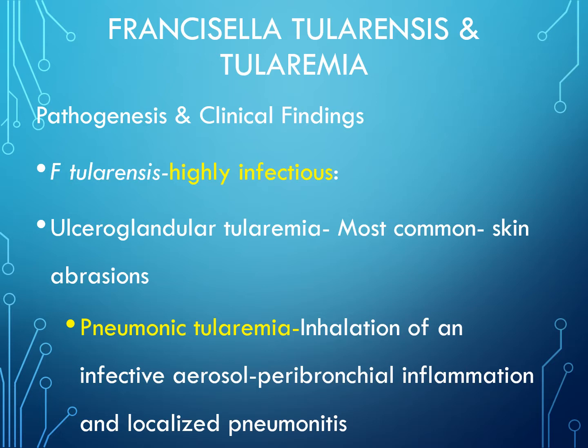The lymph nodes will enlarge and become necrotic, and sometimes they can drain for several weeks. Pneumonic tularemia is acquired through inhalation of infected aerosols and causes peribronchial inflammation and localized bronchial inflammation.